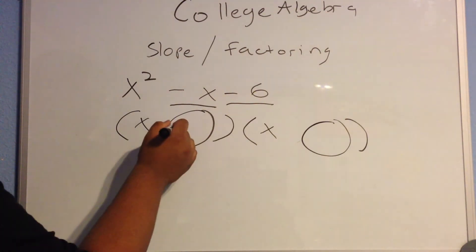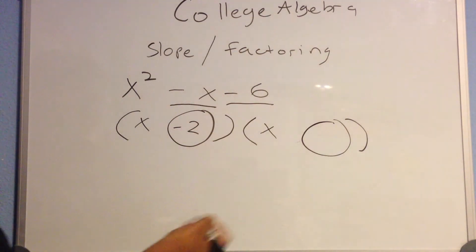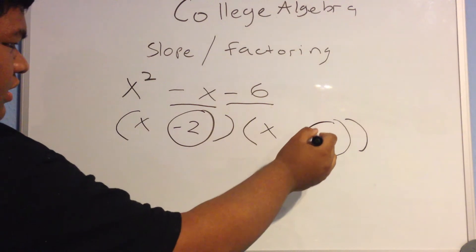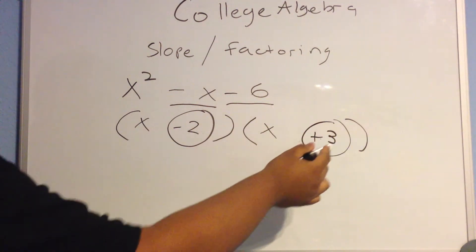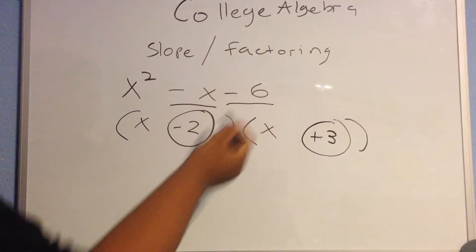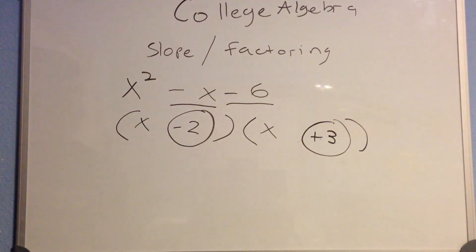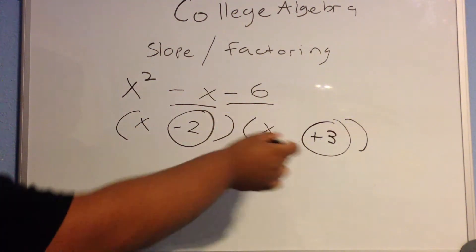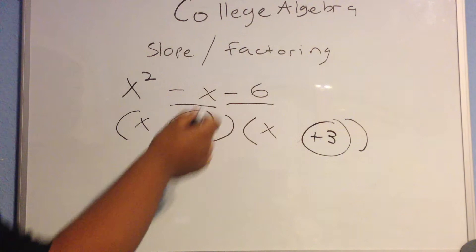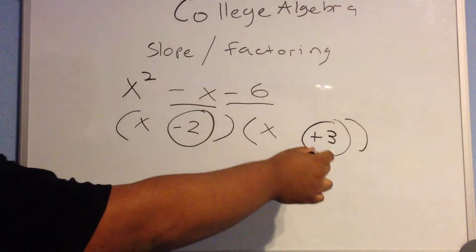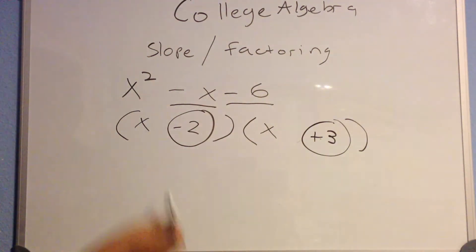Let's try negative 2 times 3. 3 times negative 2 equals negative 6. Yes, that checks out. And now, let's attempt to add both to equal to negative x. 3 plus negative 2 equals 1. That does not equal x. Let's try again.